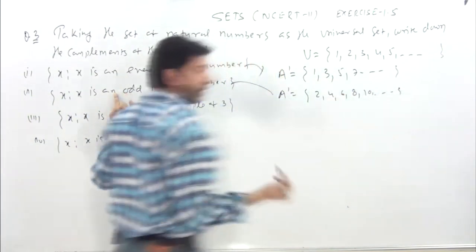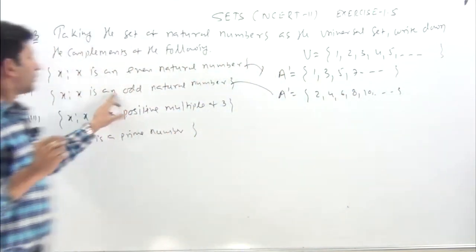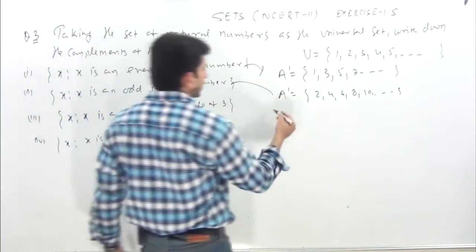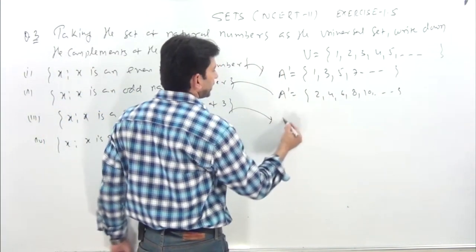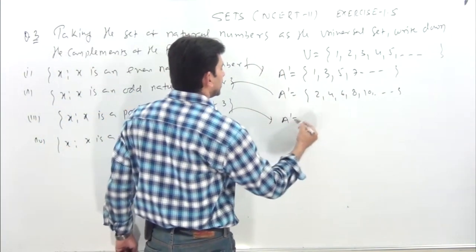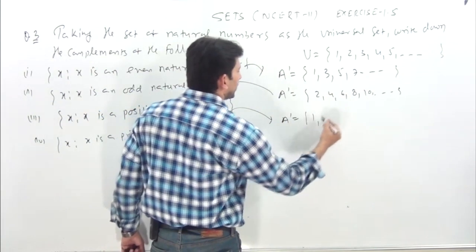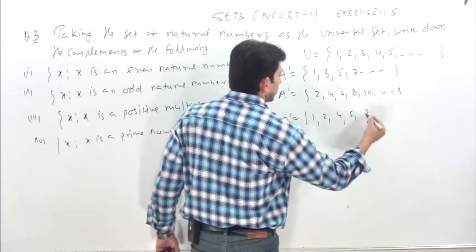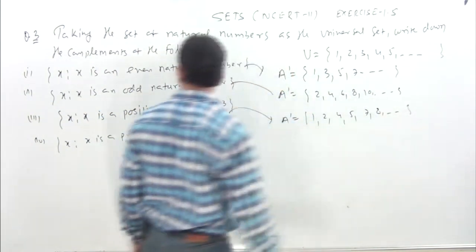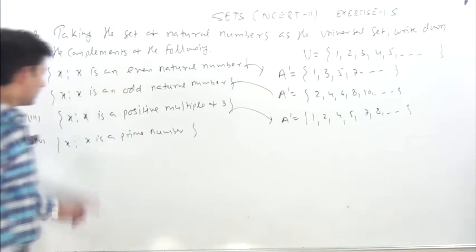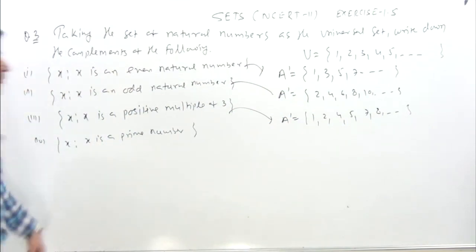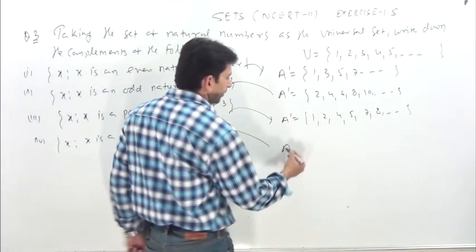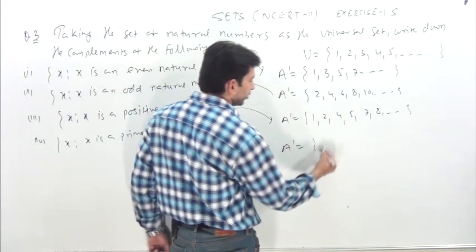Conceptual questions are actually for developing concept. If x is a positive multiple of 3, its complement = natural numbers that are NOT multiples of 3: {1, 2, 4, 5, 7, 8, ...} and so on.